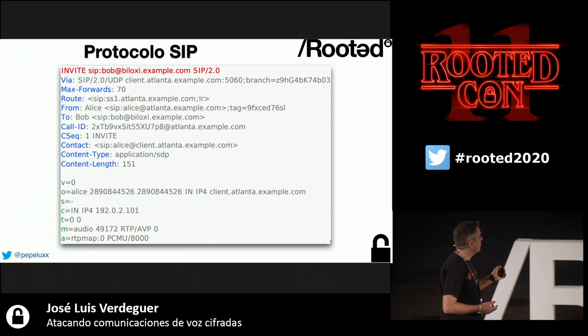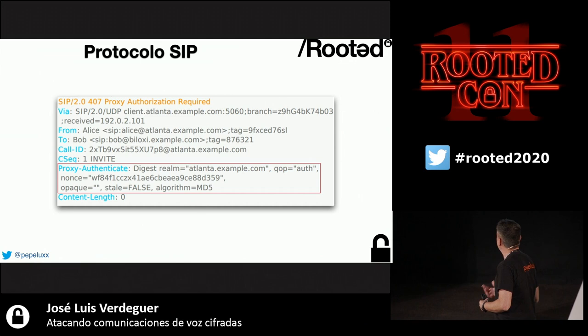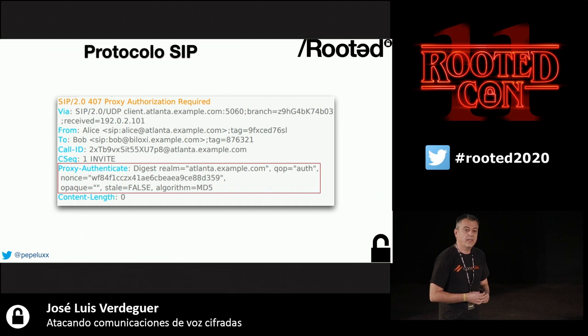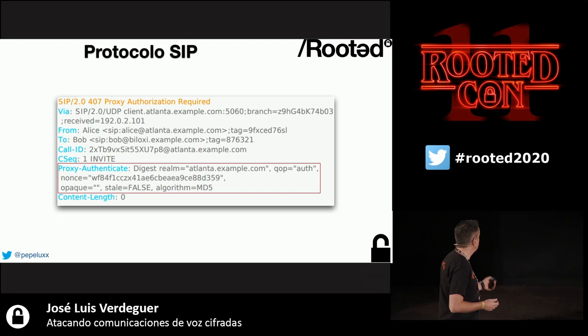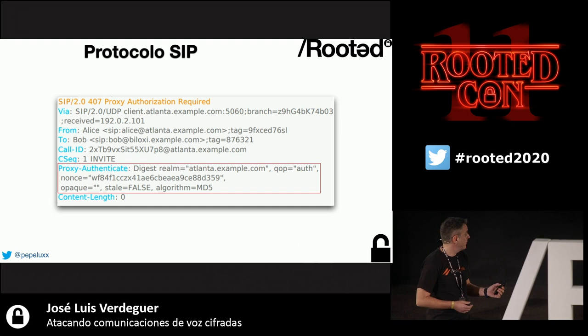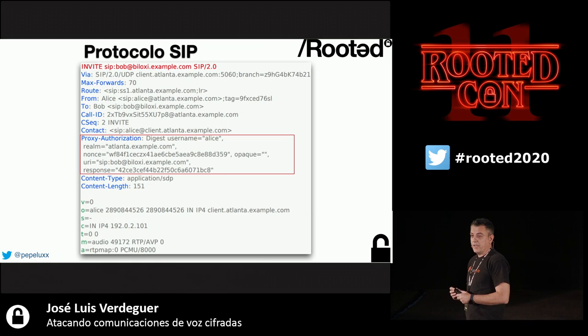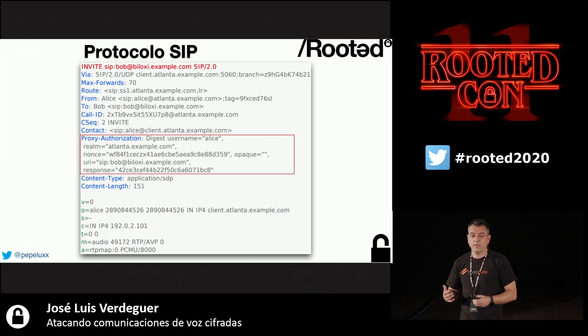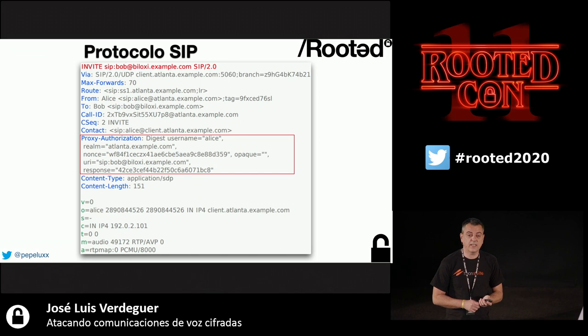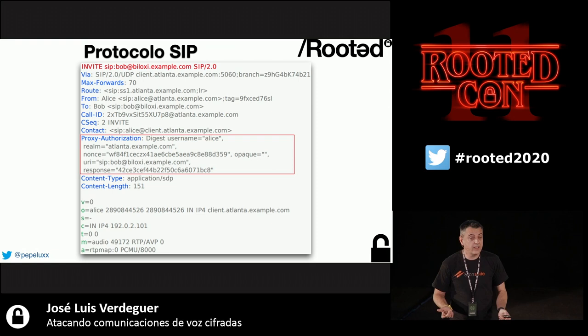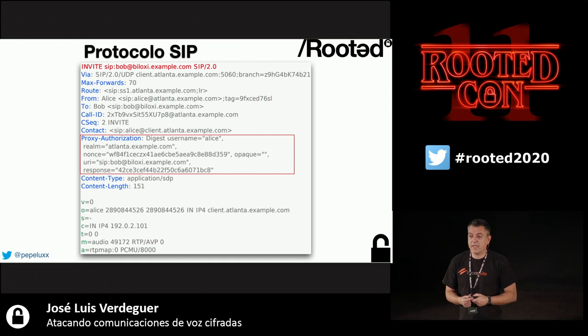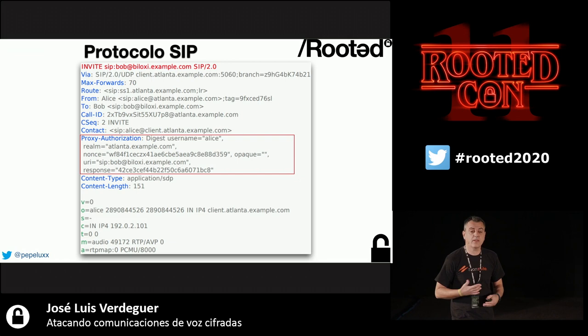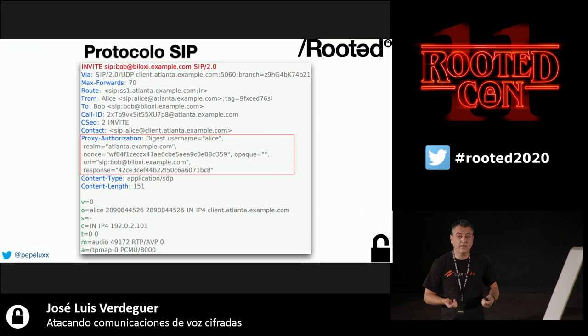If we send an INVITE to a server, the server asks for authentication. In SIP, passwords are not sent in plain text. The server sends values like realm and nonce, and the client replies with another INVITE using those values plus an MD5 hash of the password. If someone captures this traffic, all elements are visible except the password — but brute force can be used to crack it.